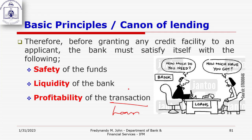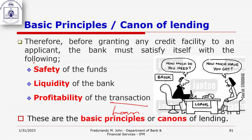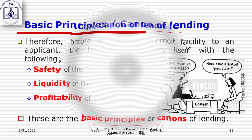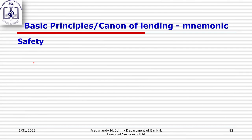Every time someone asks for a loan, ask yourself these three questions to ensure the proposition thoroughly answers all three before you move further. These are the basic principles or canons of lending: safety, liquidity, and profitability of the transaction.